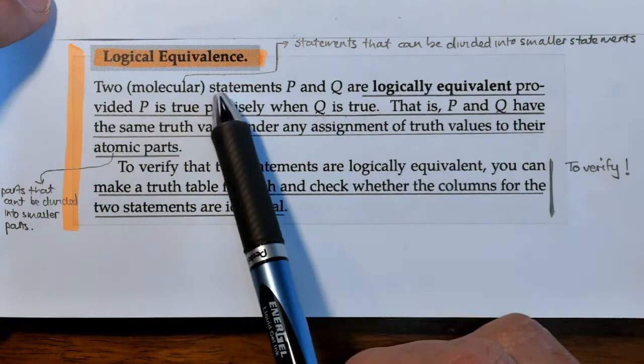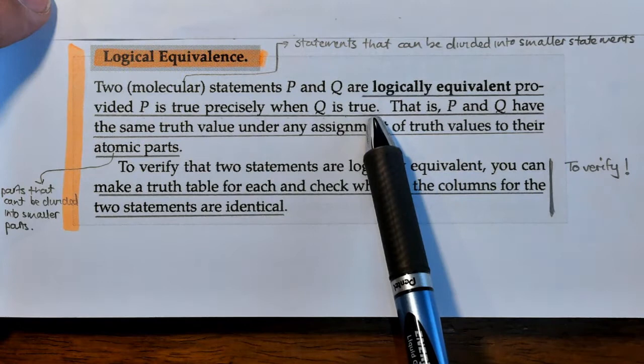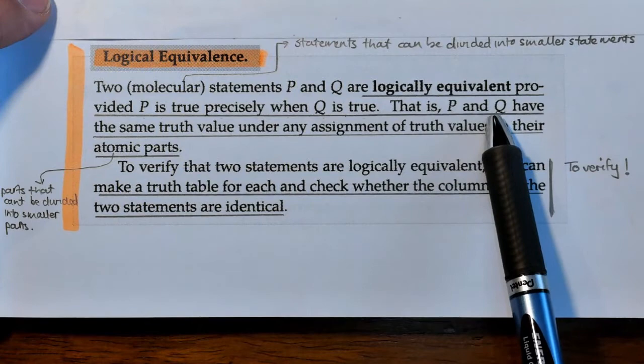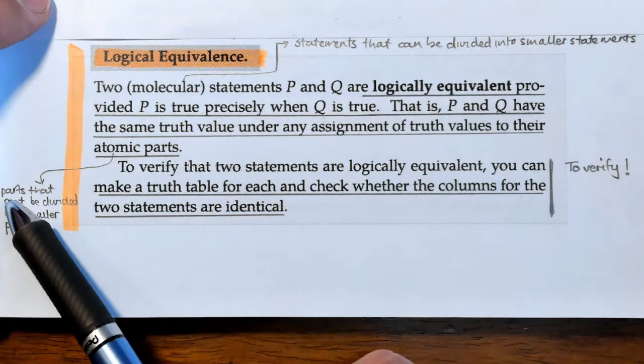So he says two molecular statements P and Q are logically equivalent provided P is true precisely when Q is true. Then they're logically equivalent. That is, P and Q have the same truth value under any assignment of truth values to their atomic parts.